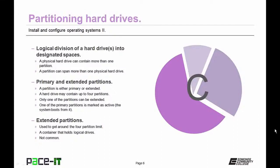Partitioning involves the logical division of a hard drive into designated spaces. A physical hard drive can contain more than one partition, and a partition can span more than one physical hard drive. A hard drive partition is either primary or extended. A hard drive can contain up to four partitions, only one of which can be extended. One primary partition is marked as active — that's where the system boots. An extended partition is used to get around the four partition limit by acting as a container to hold logical drives.